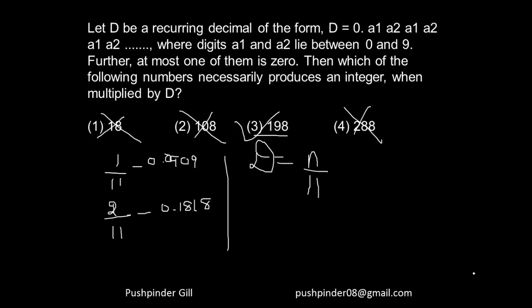I hope everyone understood. If you see, it's a form of 0 point some number, another number, some number, another number and so on. Only fractions with the denominator 11 give these kinds of answers, so that means this number must be a multiple of 11. Only this number is a multiple of 11, hence this is the answer.